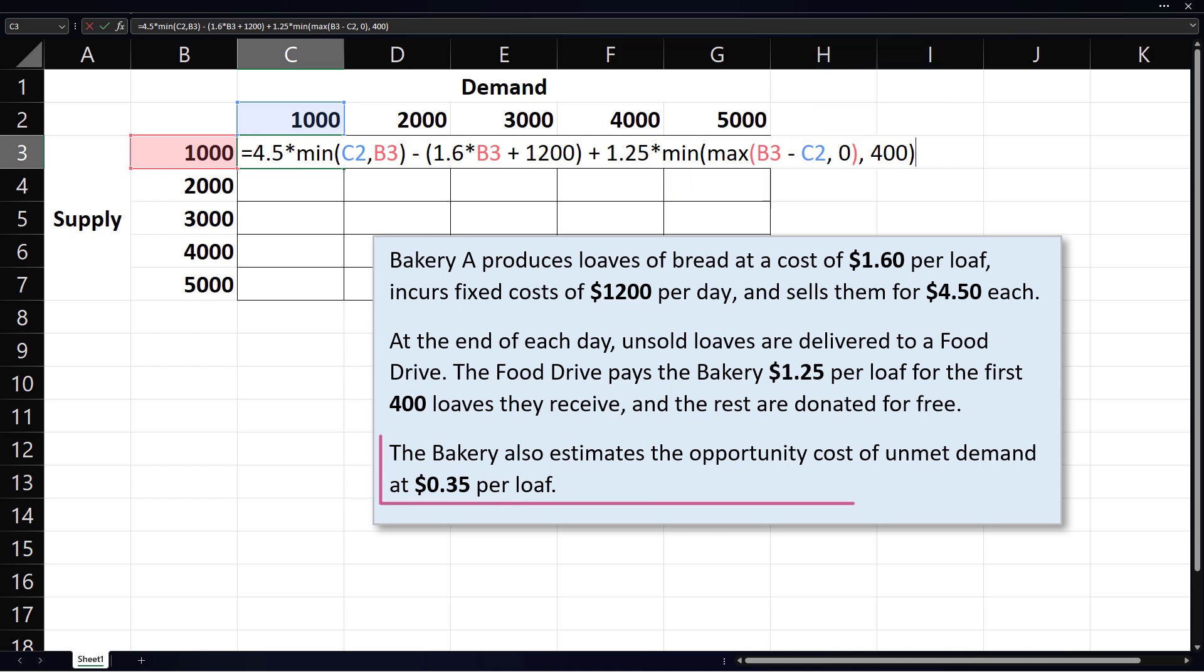Finally, we have $0.35 lost sales per loaf. That is, it costs the bakery $0.35 per unit whenever there is shortage. That is, when demand exceeds supply. So we subtract 0.35 times the amount of demand minus supply.